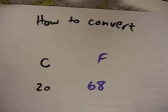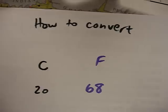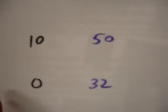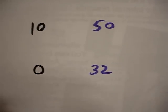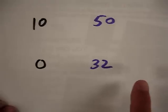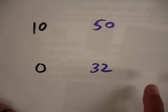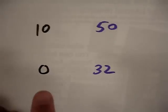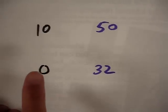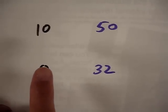So this is a system on how to convert. I put the zero in Celsius to 32 in Fahrenheit, and then I add for every 10 degrees Celsius, 18 degrees Fahrenheit.